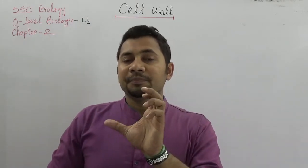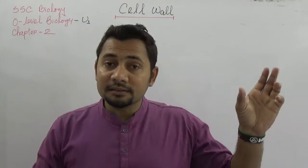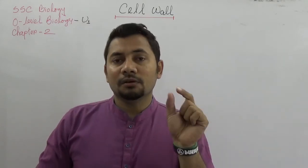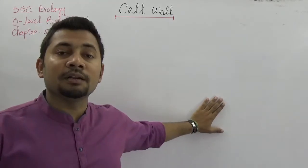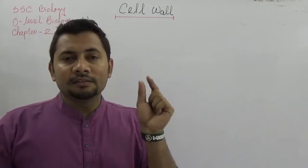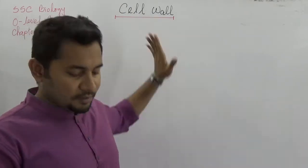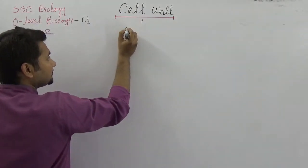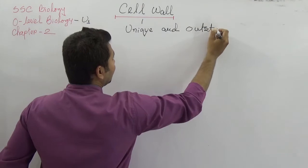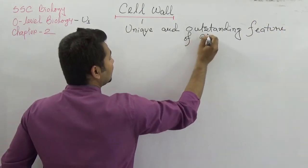I already discussed the structure of cells in two parts: cell wall and protoplasm. Under protoplasm we studied cytoplasm, nucleus and cytoplasmic organelles. Before studying cell wall, we need to know that we have two different types of cells: plant cell and animal cell. The most unique and outstanding feature of plant cell is the cell wall.